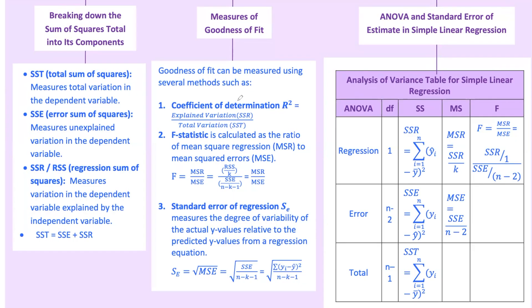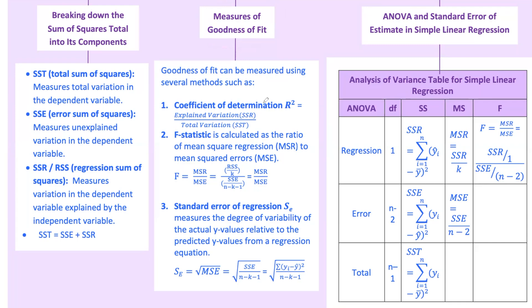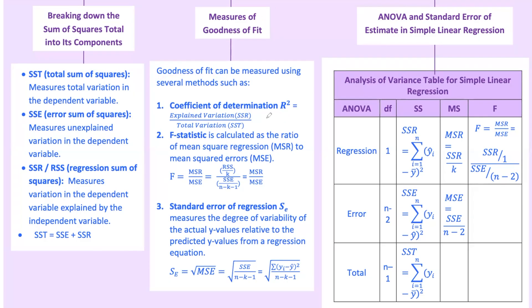How well does our regression model fit the data? We use a few metrics to assess this. We use measures like the coefficient of determination, f-statistic, and the standard error of regression to assess the goodness of fit. Coefficient of determination, r-squared, tells us the percentage of the variation in y that is explained by x. The closer r-squared is to 1, the better the model fits the data.